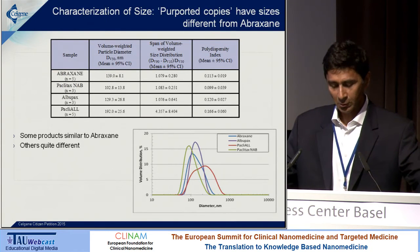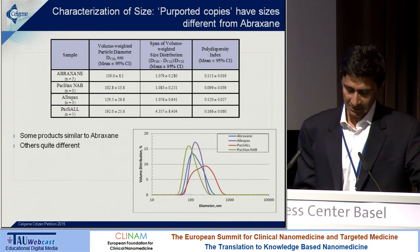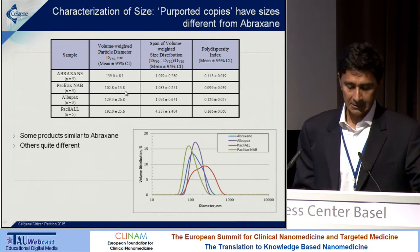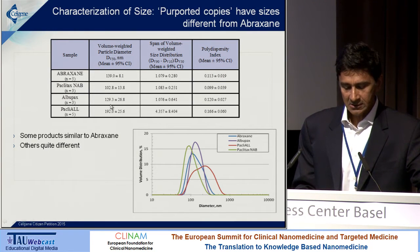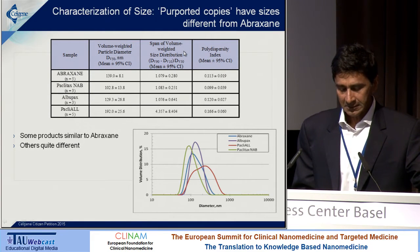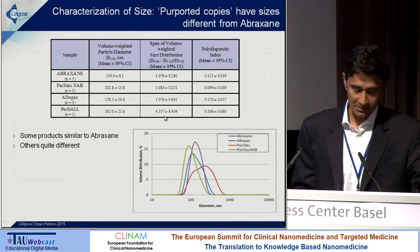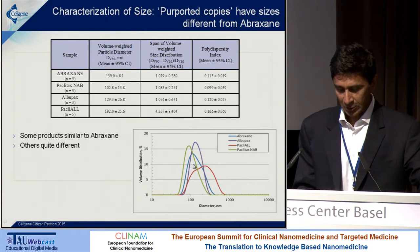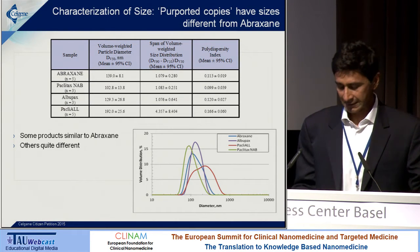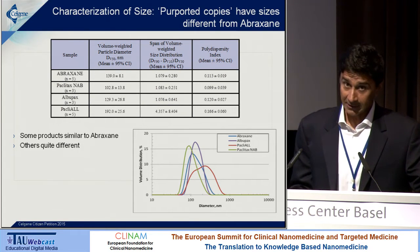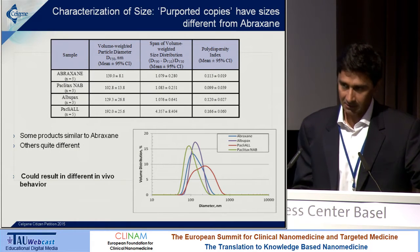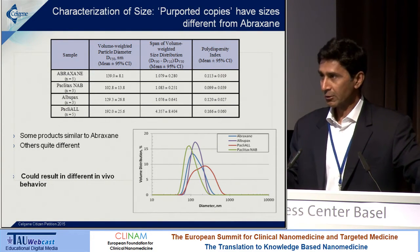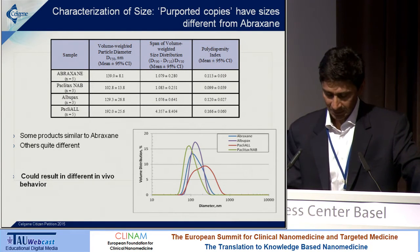A key thing we always talk about is size in the context of nanoparticles. Here's actual data from these different products including Abraxane and the copies — you can see that a volume-weighted diameter like D50 is different in some cases but similar in others. If you look at the span, it's similar in some cases and quite different in others. Remember, these are marketed products supposed to be copies of Abraxane, but in this simple size test you can clearly see these look different. Clinically we don't know the impact because there's no clinical data on any of these copies — we have our data on Abraxane across three large Phase 3 trials.